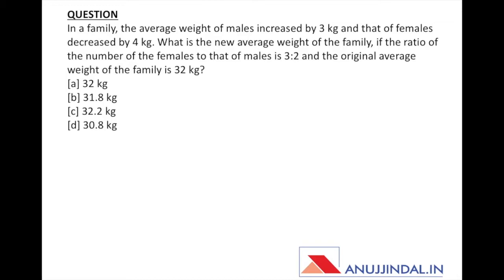The original average weight of the family is 32 kg. So in this question, there are some males and females in the family. The average weight of the family is 32 kg, the ratio of females to males is 3 to 2, the average weight of males is increased by 3 kg, and that of females is decreased by 4 kg. We need to find the new average weight of the family.